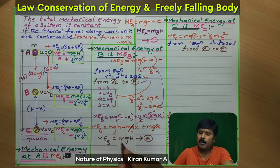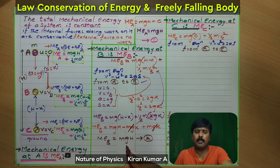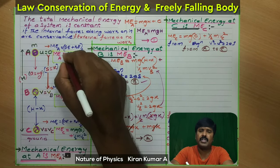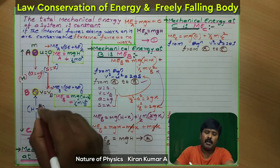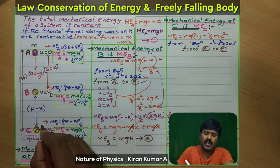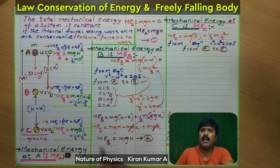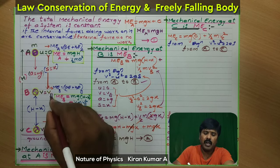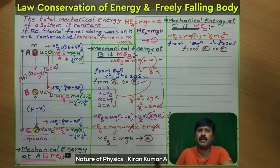So mechanical energy at point A and at point B are both mgh — total energy remains constant. At point A, total energy is entirely in the form of potential energy. At point B, total energy is split between potential energy (due to height) and kinetic energy (due to velocity).